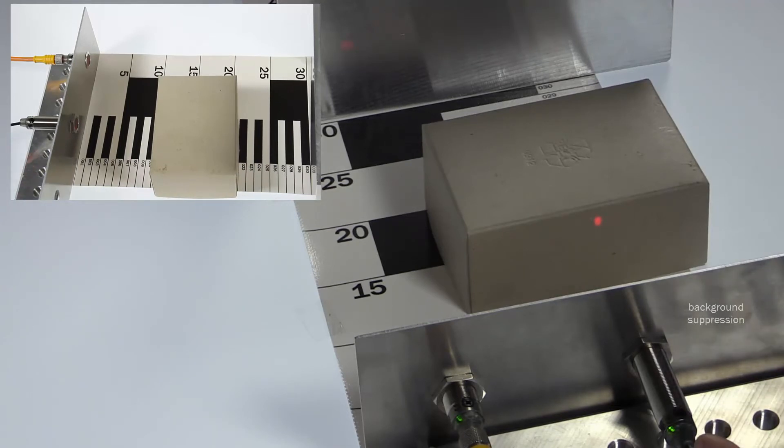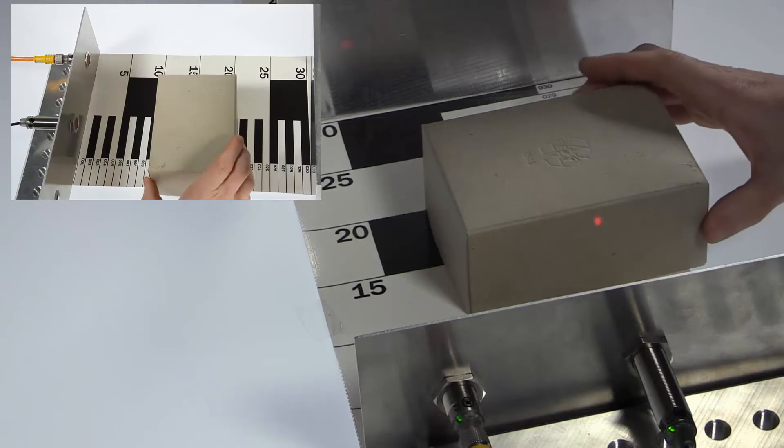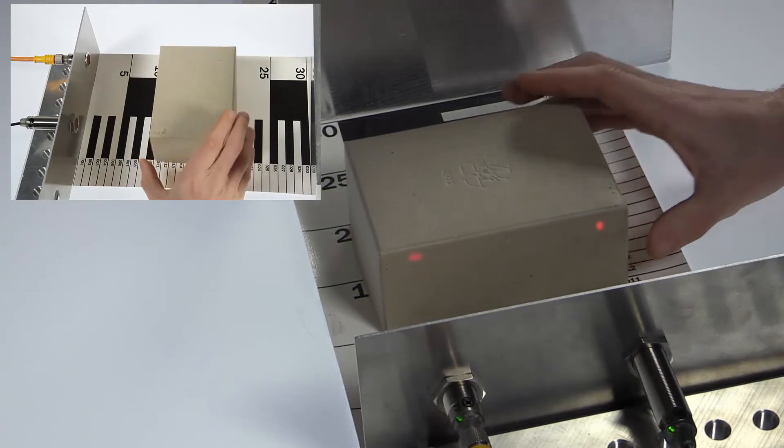For this demonstration, we compare the GRTP18 background suppression version with the GRTE18 energetic 400 mm version. For both sensors, we will follow the adjustment procedure using the potentiometer.